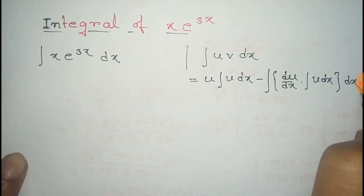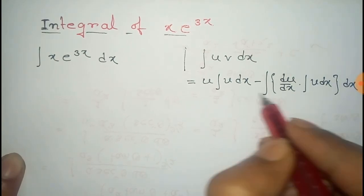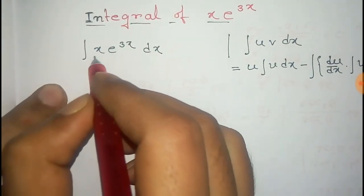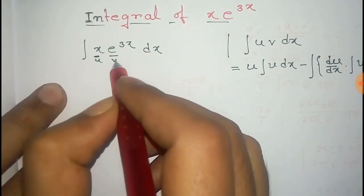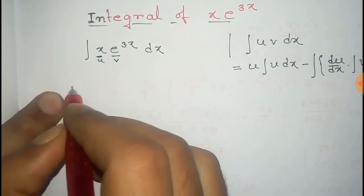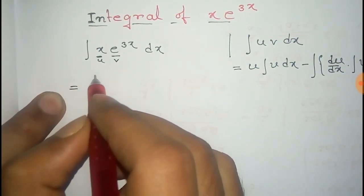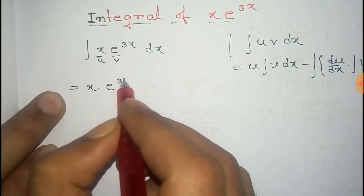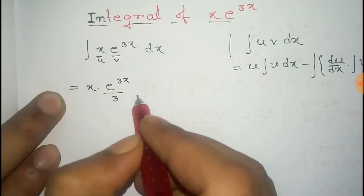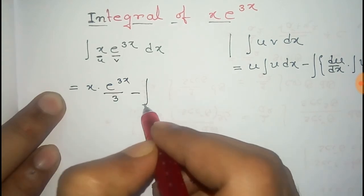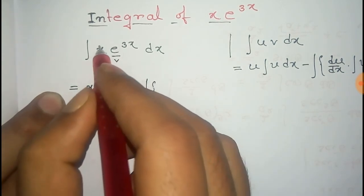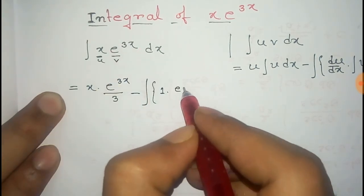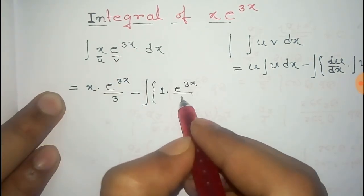Now I apply this integration by parts formula. I take u = x and v = e^(3x). Applying the formula, this gives x · ∫e^(3x) dx, which is x · e^(3x)/3, minus the total integral of the derivative of x — that is d/dx of x equals 1 — times ∫e^(3x) dx, which is again e^(3x)/3.